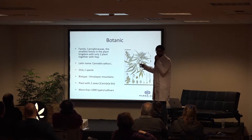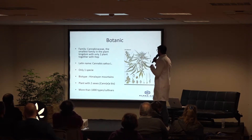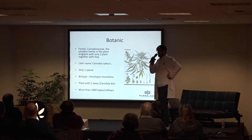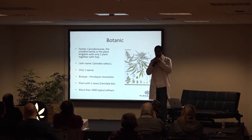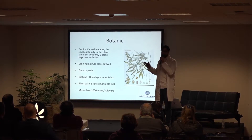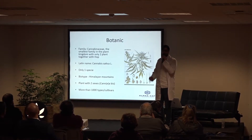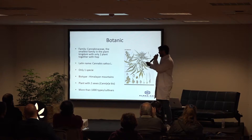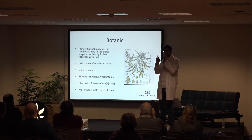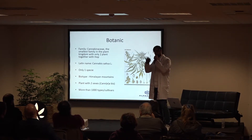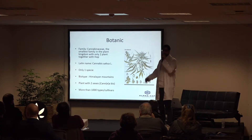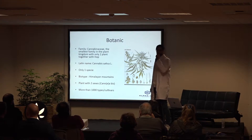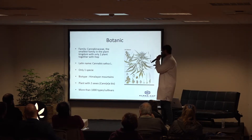The cannabis family belongs to the Cannabinaceae, which is the smallest botanical plant family in the nomenclature. There are only two plants in it: cannabis and hops — Humulus — which we use for beer. It's funny because it's one of the most consumed plants in the world, as is cannabis, and together they are cousins.